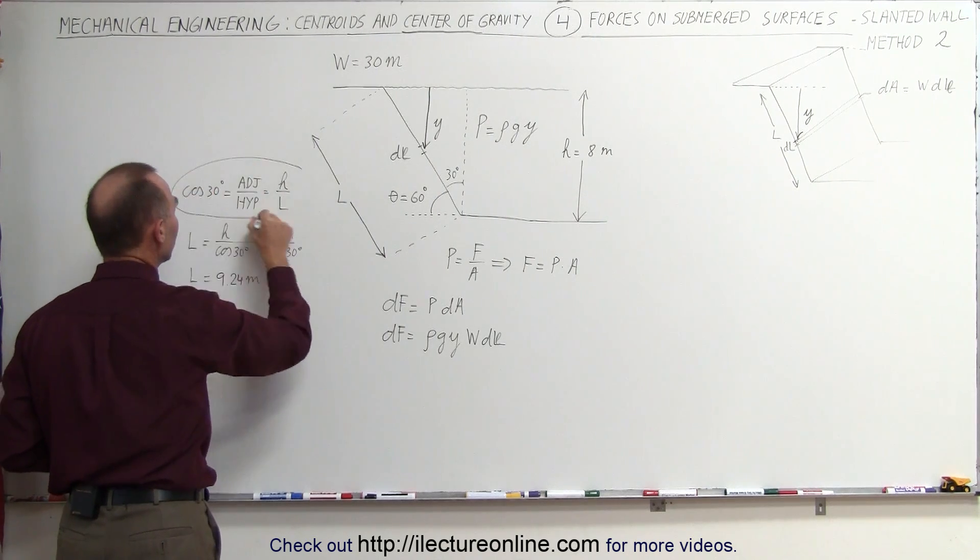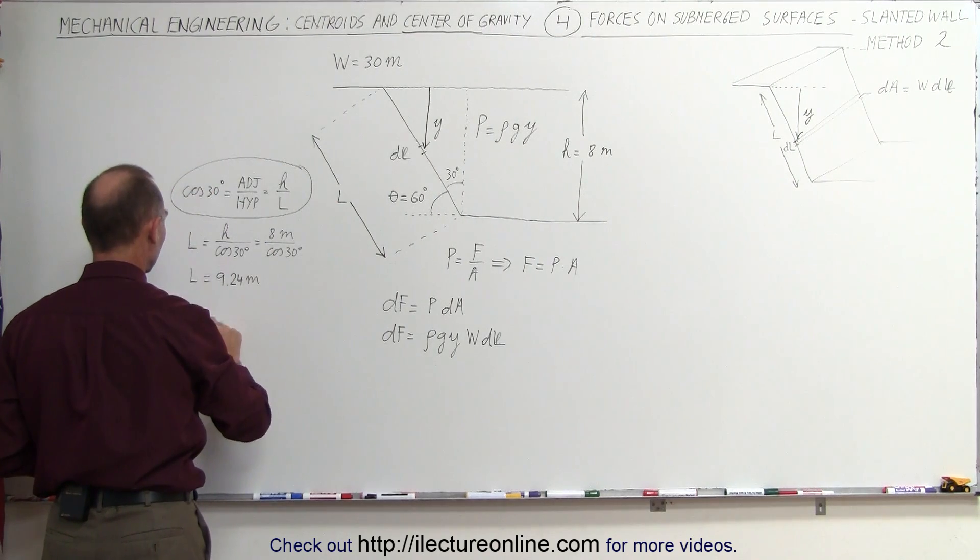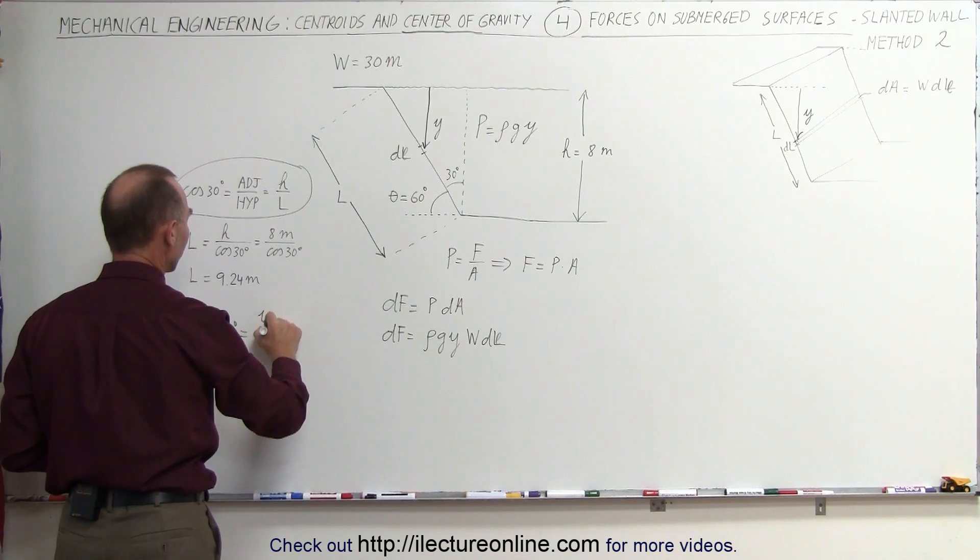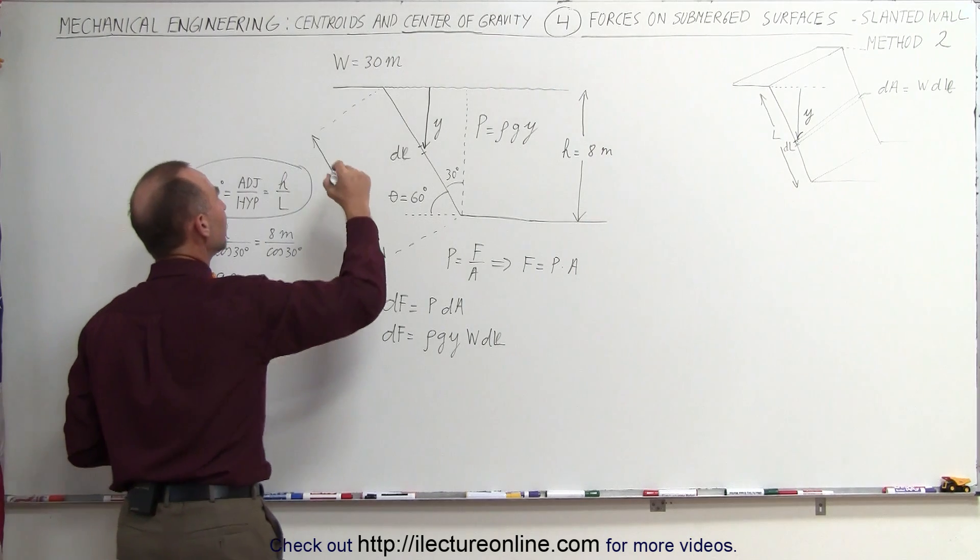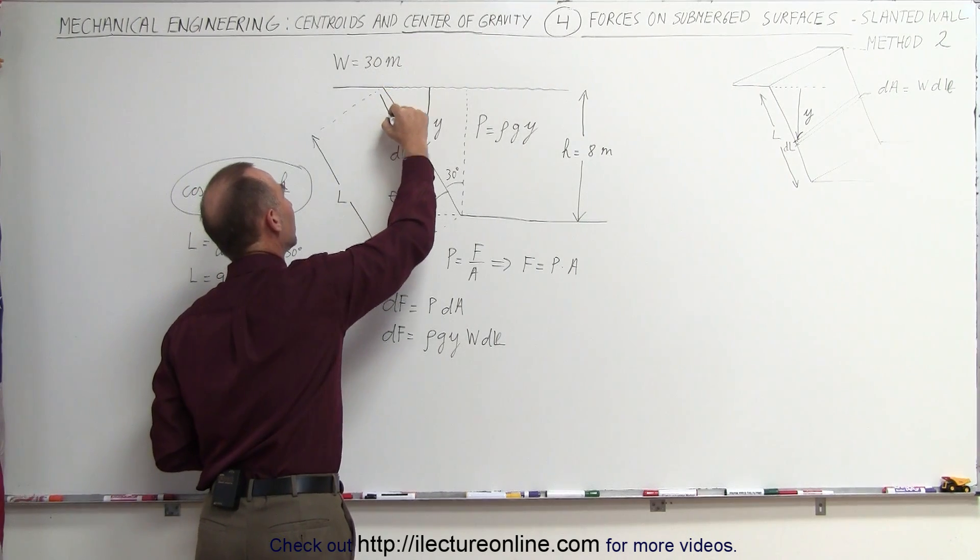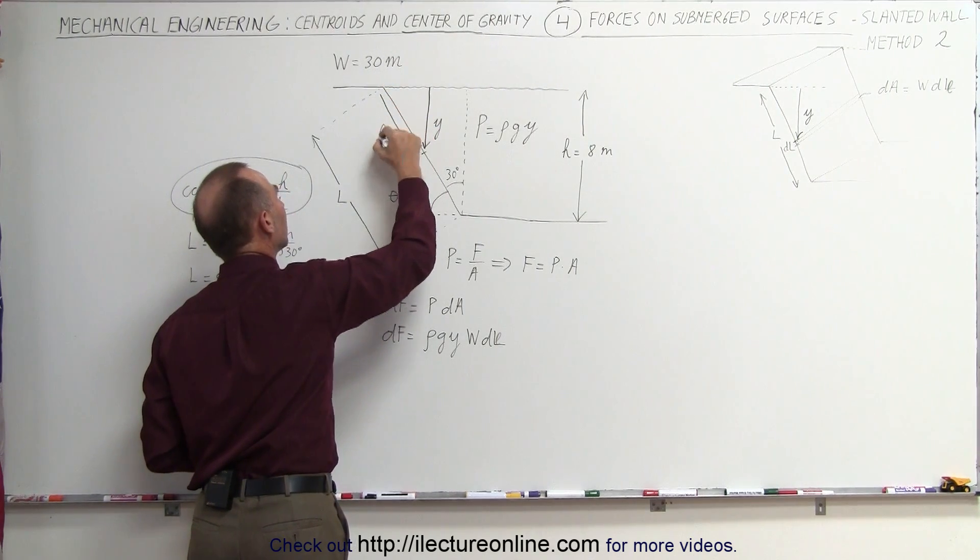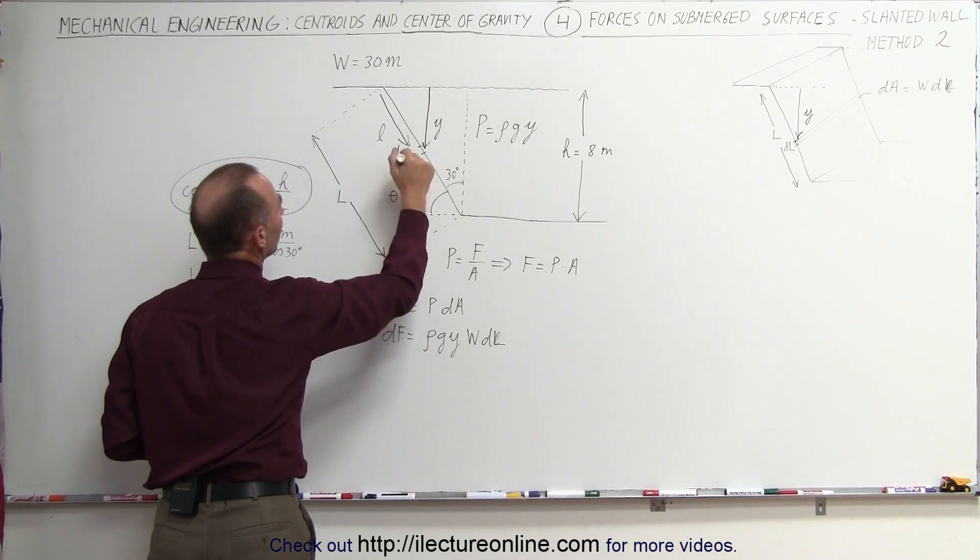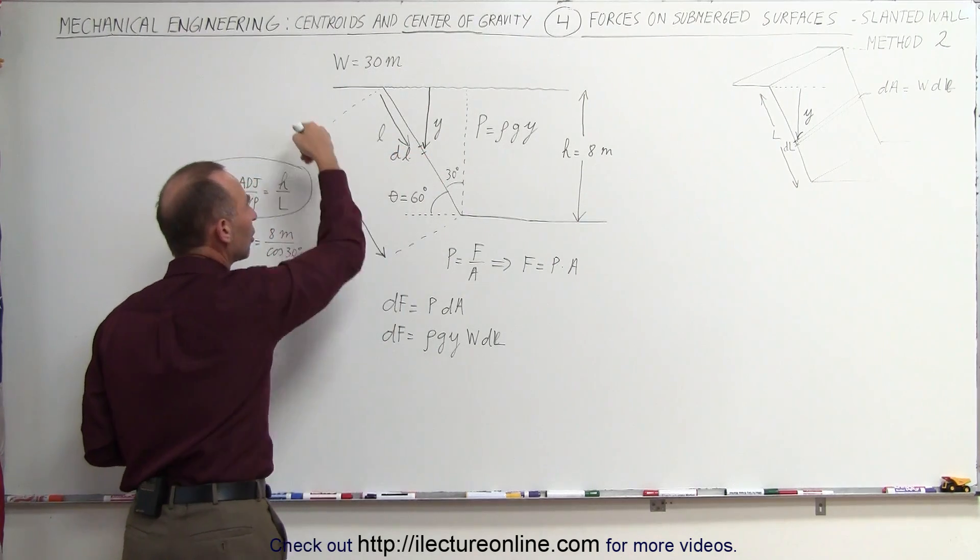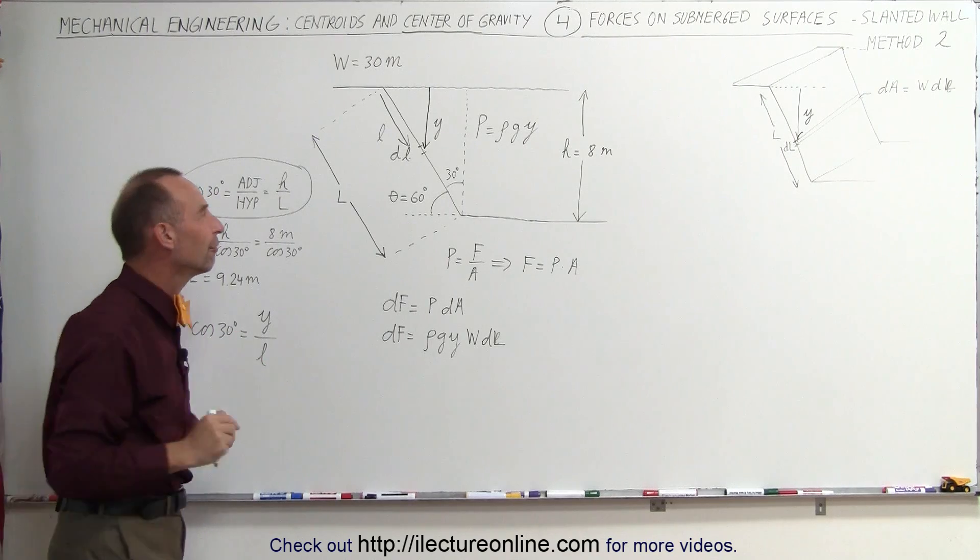We can say that the cosine of 30 degrees is equal to the depth y divided by, let's call it l. l being the distance down from the surface in this direction. Let's call it a little l, and let's call that a small little dl, where the total length, we'll call it capital L, so we don't confuse the variables.